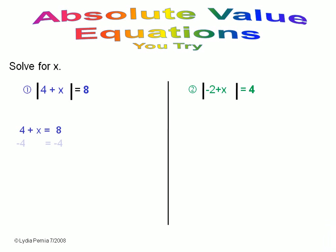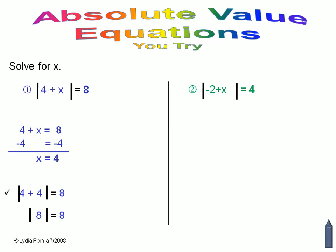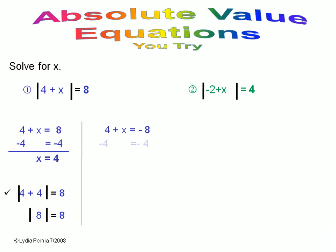For the first one, the first situation is four plus x equals positive eight. Just subtract four from both sides, and x is equal to four. The second possibility is four plus x equals negative eight, and again you subtract four from both sides. Your answer now is x equals negative twelve. So we have two answers: x equals four and x equals negative twelve.